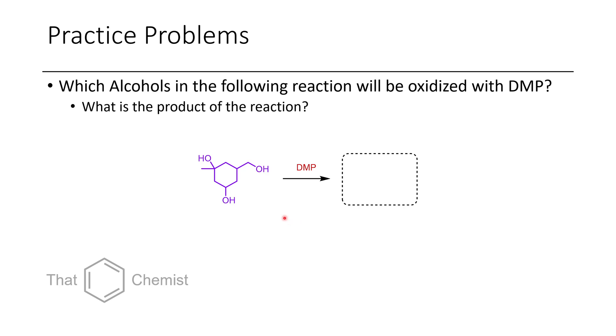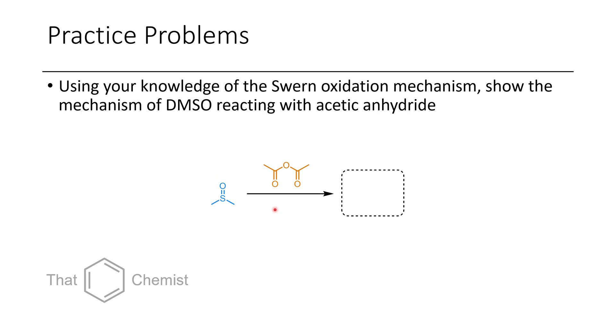I'd like to assign a few practice problems. First, taking a triol and treating it with DMP — what kind of product will you make? Additionally, what type of alcohols typically react faster with Dess–Martin periodinane? The next problem: take DMSO and treat it with acetic anhydride — what type of product does this form? It's a little similar to a Swern oxidation, but acetic anhydride is a different activator than oxalyl chloride. I want to emphasize that you can produce the sulfonium using different methods. I hope this has been a useful lecture on the oxidation of primary and secondary alcohols affording aldehydes and ketones. If you have any questions or comments, please leave them below. Have a great day.